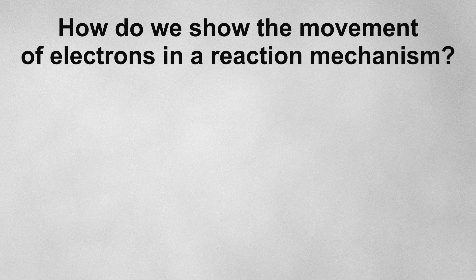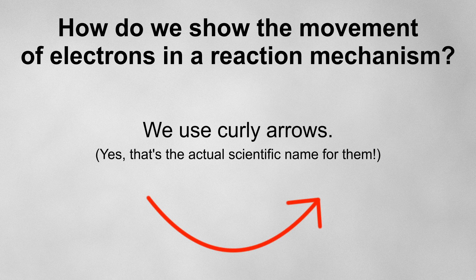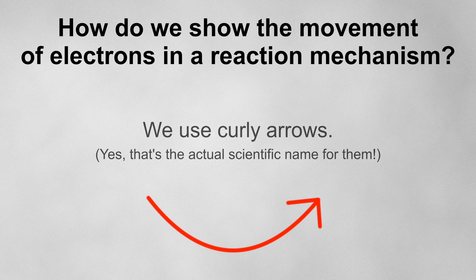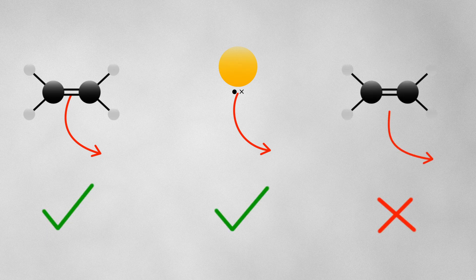So how do we show how electrons move in a reaction mechanism? For that we use curly arrows. A curly arrow represents the movement of a pair of electrons. For this reason, it must always start from either a bond or from a lone pair. We need to be very specific when drawing reaction mechanisms, so be careful not to draw a curly arrow just floating in between molecules.